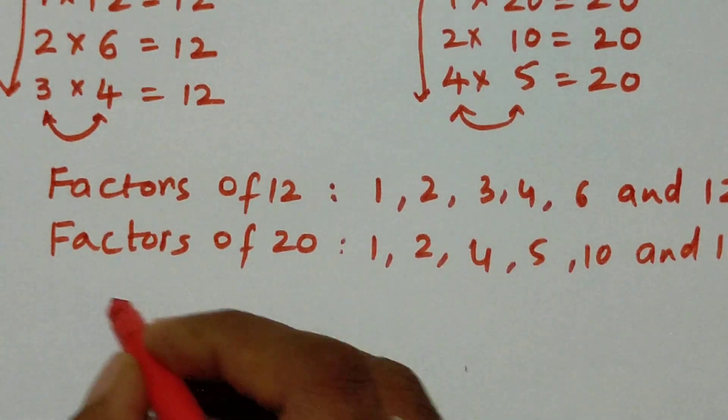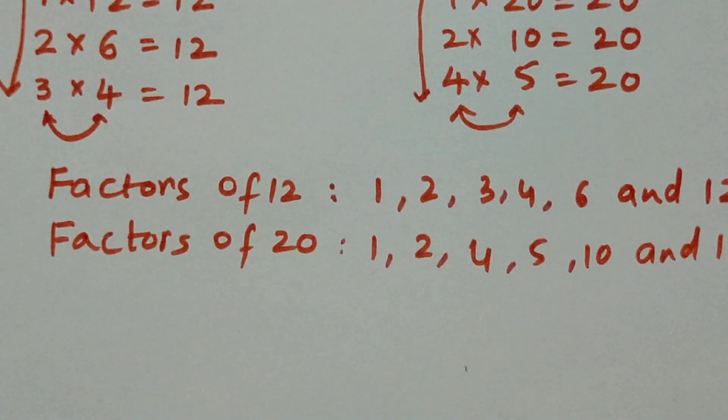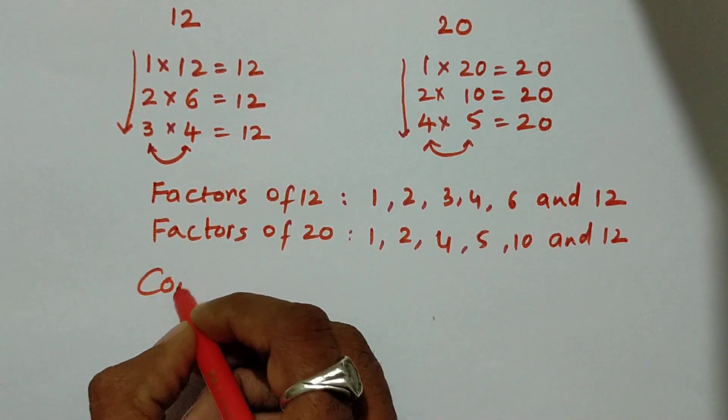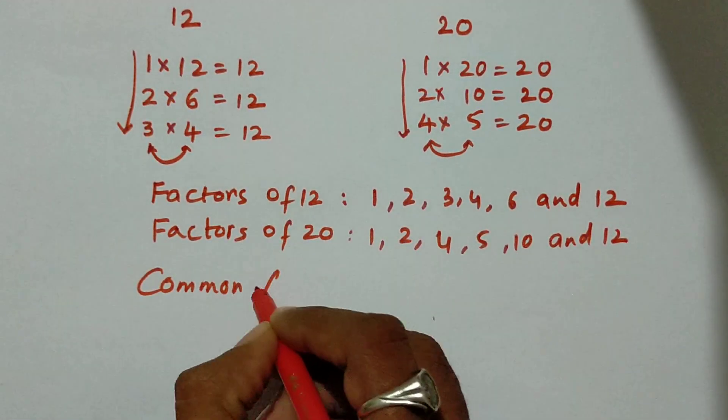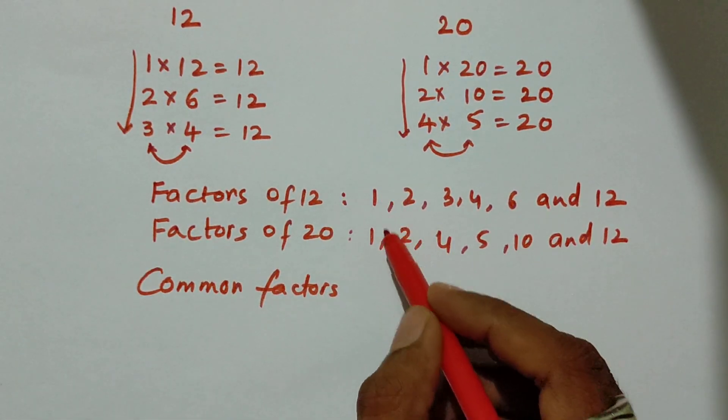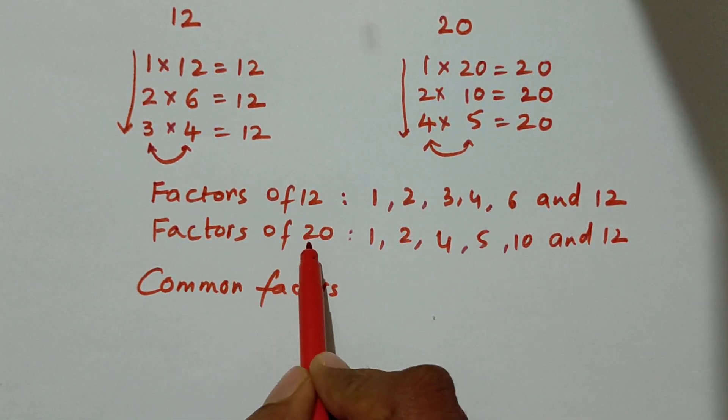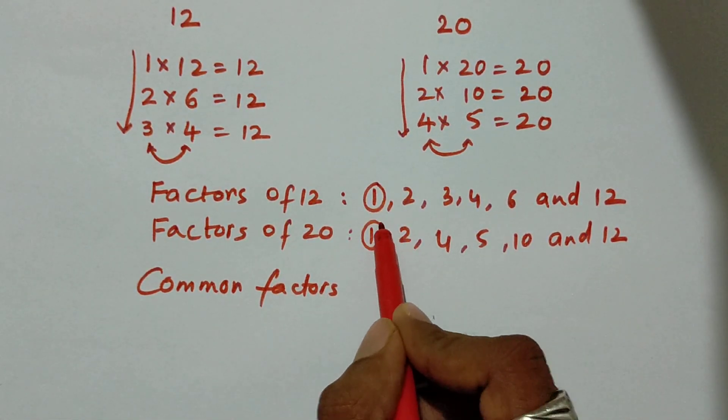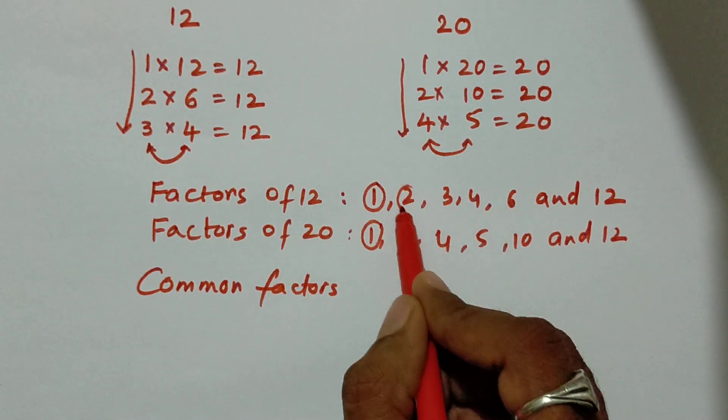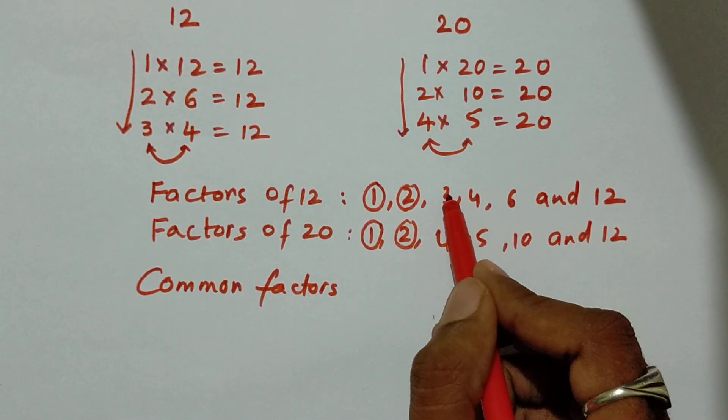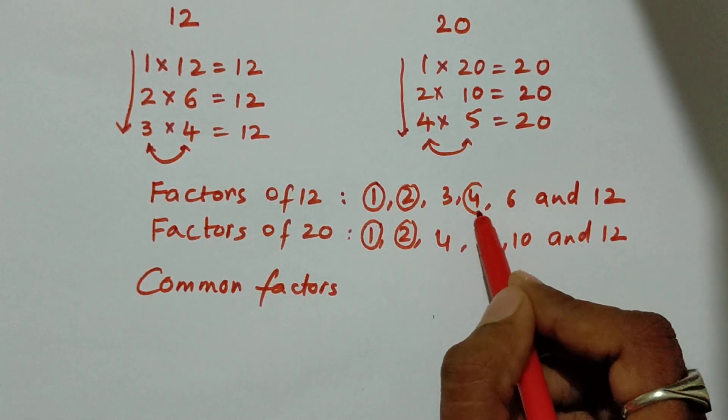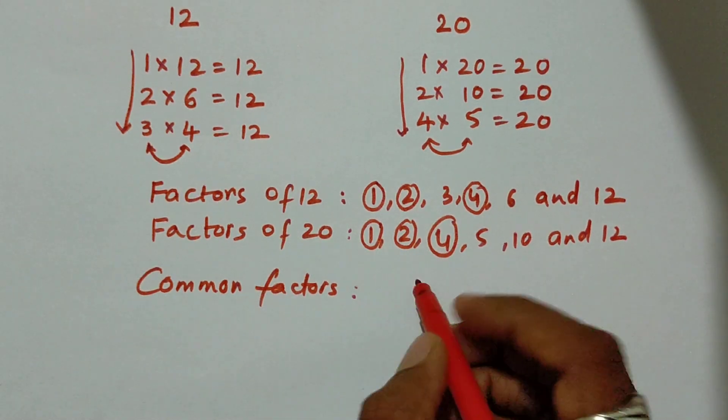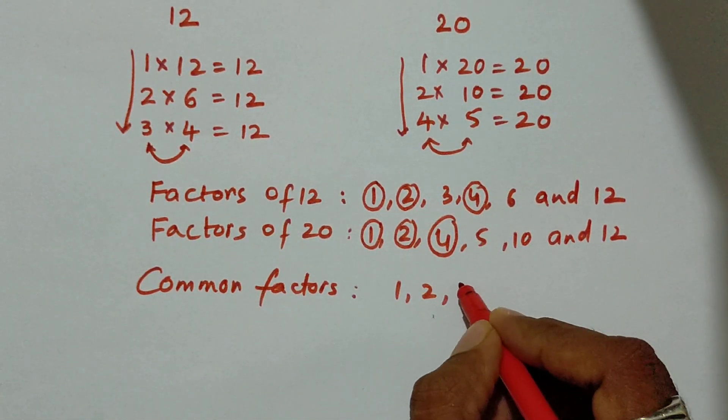Now I am supposed to write common factors. What are the common factors? Here in the list of 12 and in the list of 20, what are the common factors? 1 is common in both, 2 is also common, then 3 is not common, 4 is a common factor and there is no other factor common. So what are the common factors I have to write here? 1, 2, 4.